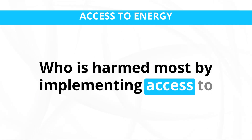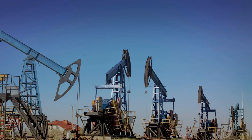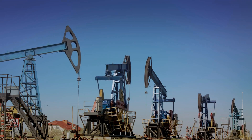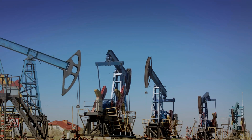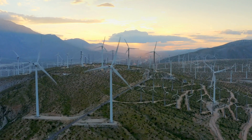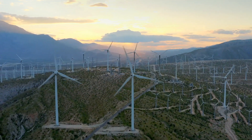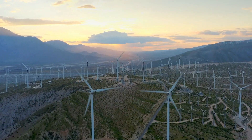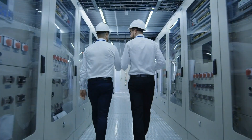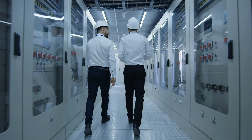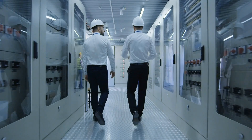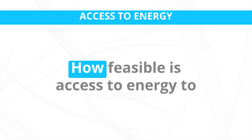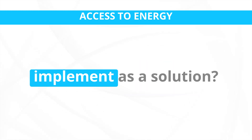Who is harmed most by implementing access to energy as a solution? Environmental ecosystems may suffer, as some energy solutions have adverse effects on natural ecosystems, harming biodiversity and ecosystem services. Fossil fuel-dependent industries may be negatively impacted as renewable energy adoption affects jobs and economies in certain regions. Energy companies with monopoly control may also see reduced control and profits where increased access is introduced.